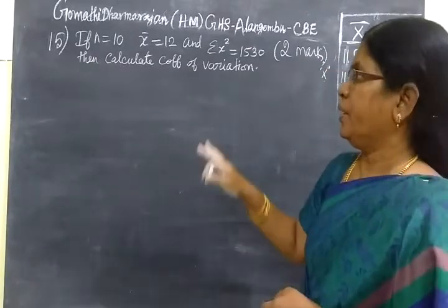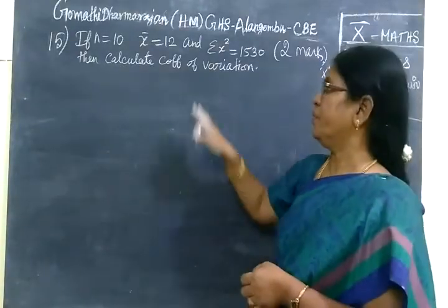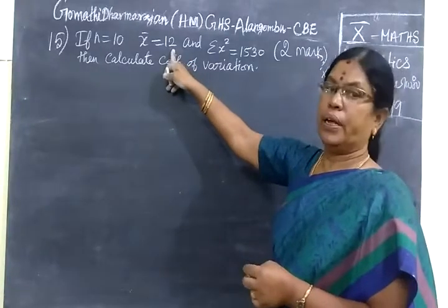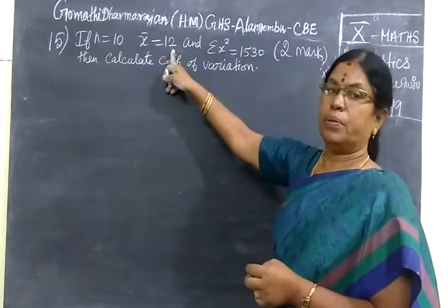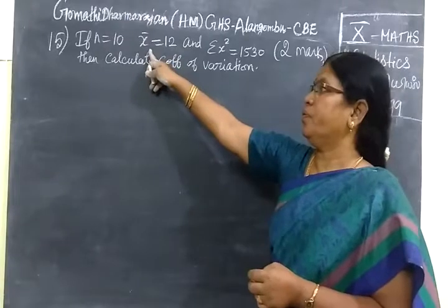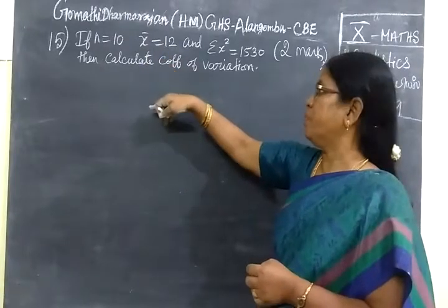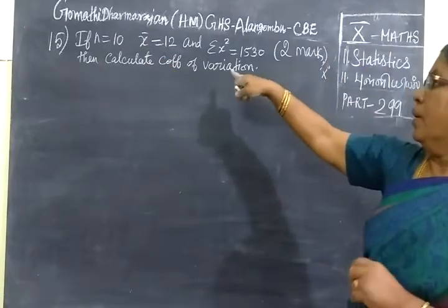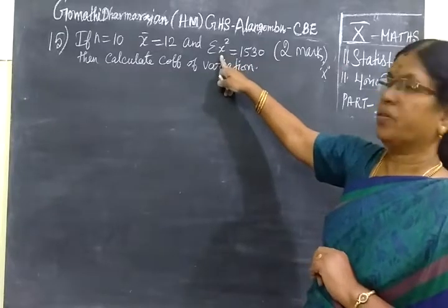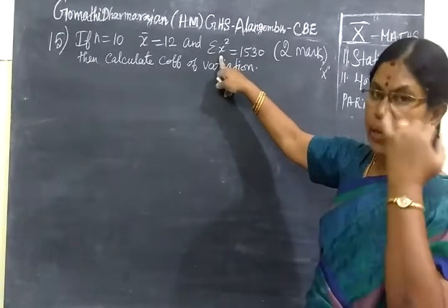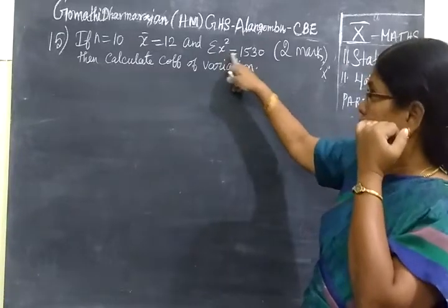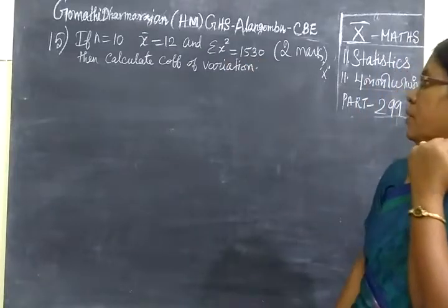Here we are given N, number of items given X bar. X bar means Sigma X by N. We know the formula for X bar, Sigma X by N. And it is given sum of the squares of the item equal to 1530.